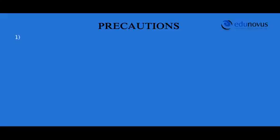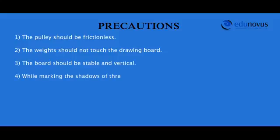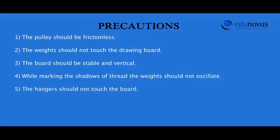Precautions: The pulley should be frictionless. The weights should not touch the drawing board. The board should be stable and vertical. While marking the shadows of the thread, the weights should not oscillate. The hanger should not touch the board. Arrows should be marked to show the direction of forces.